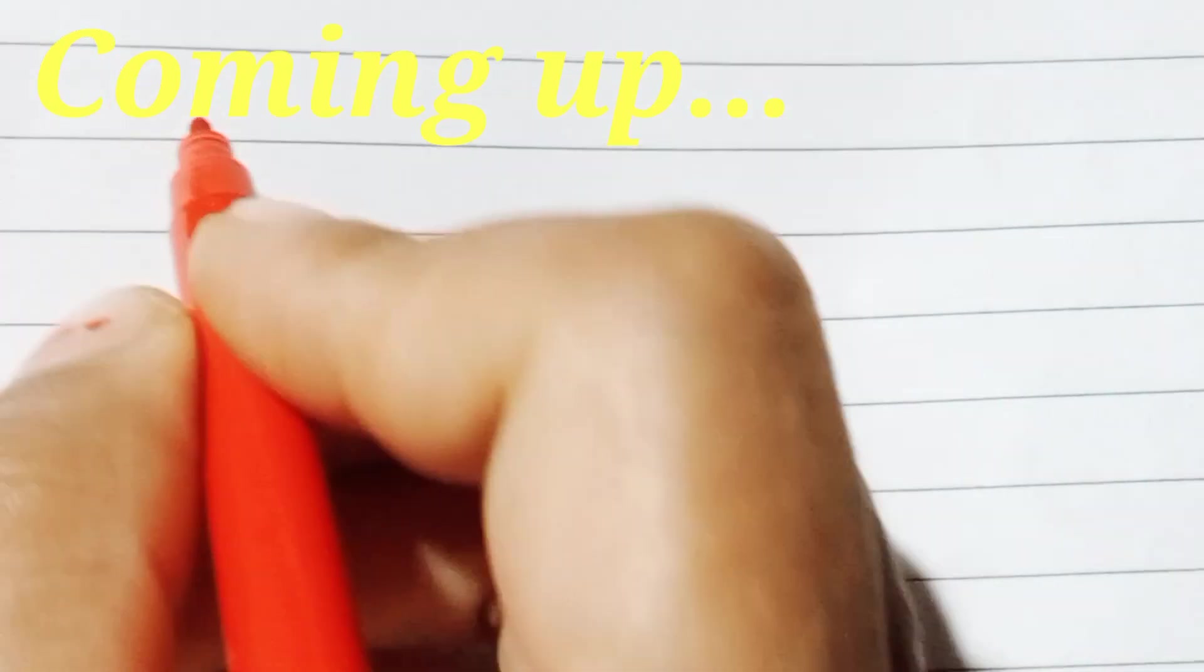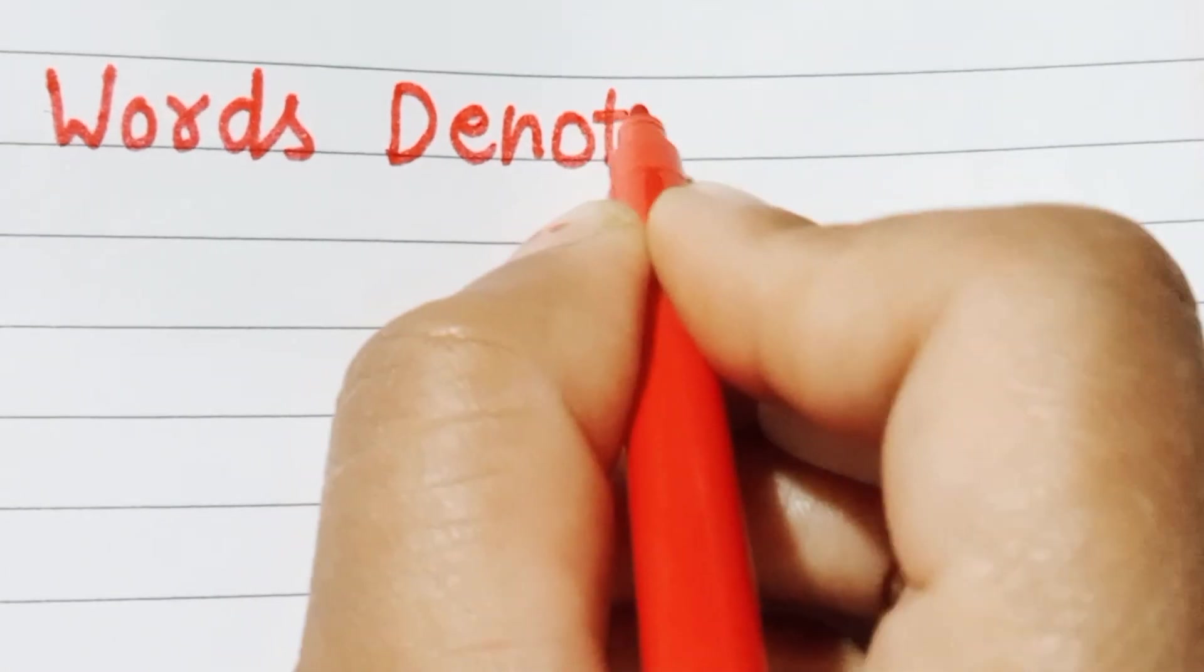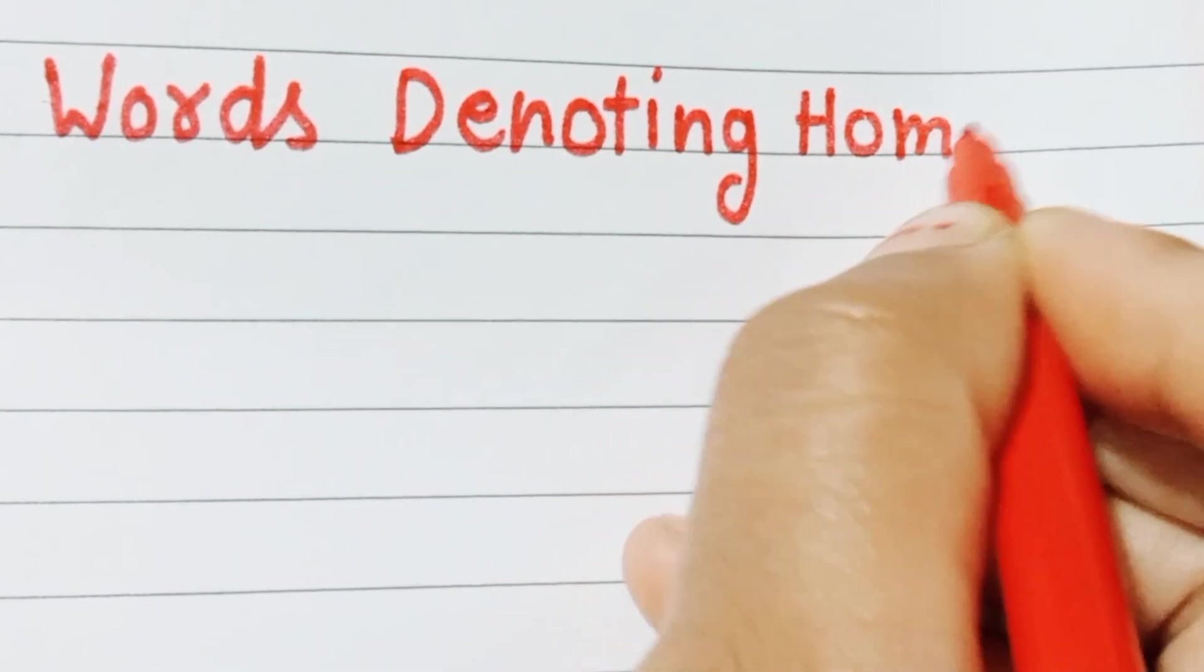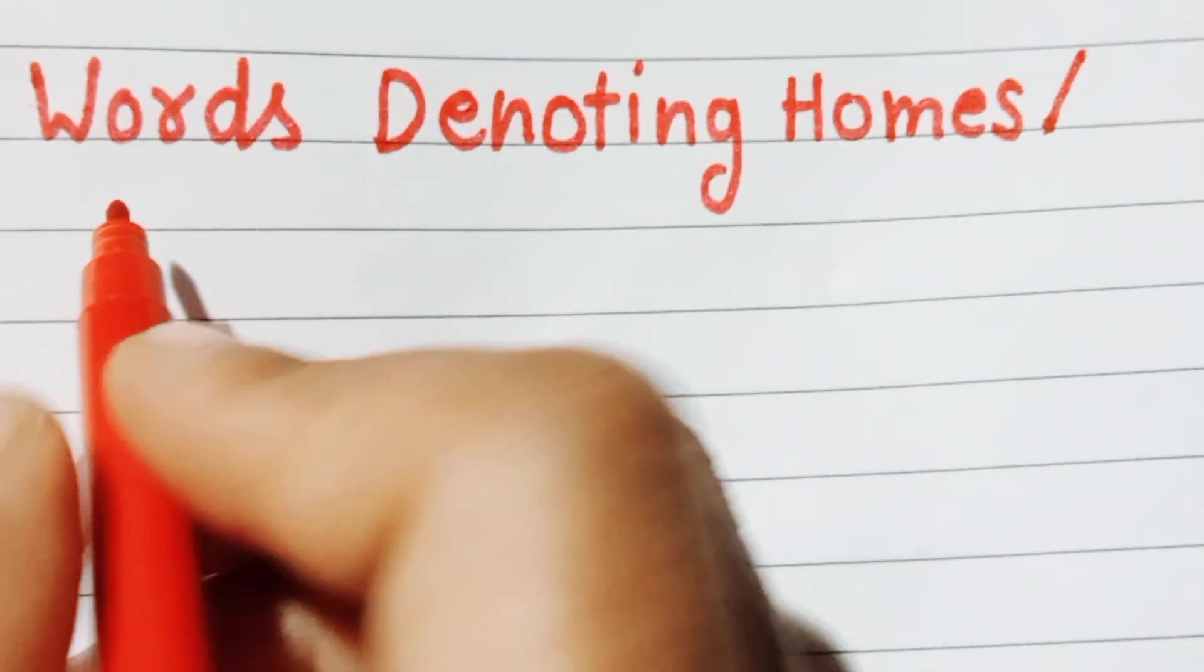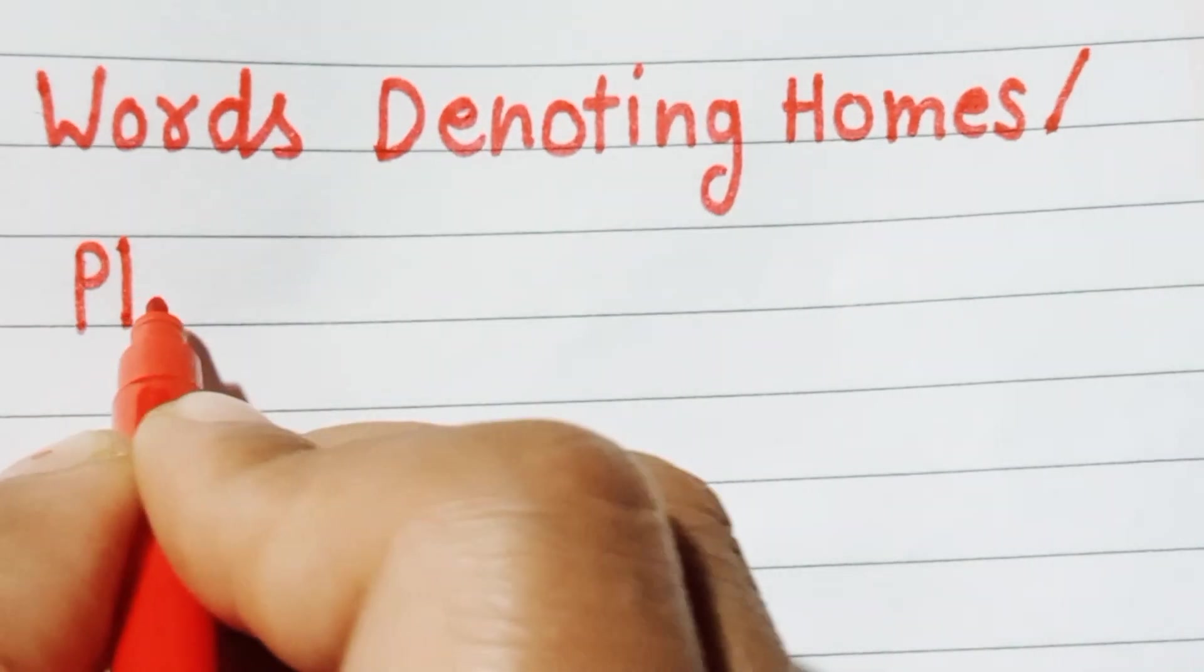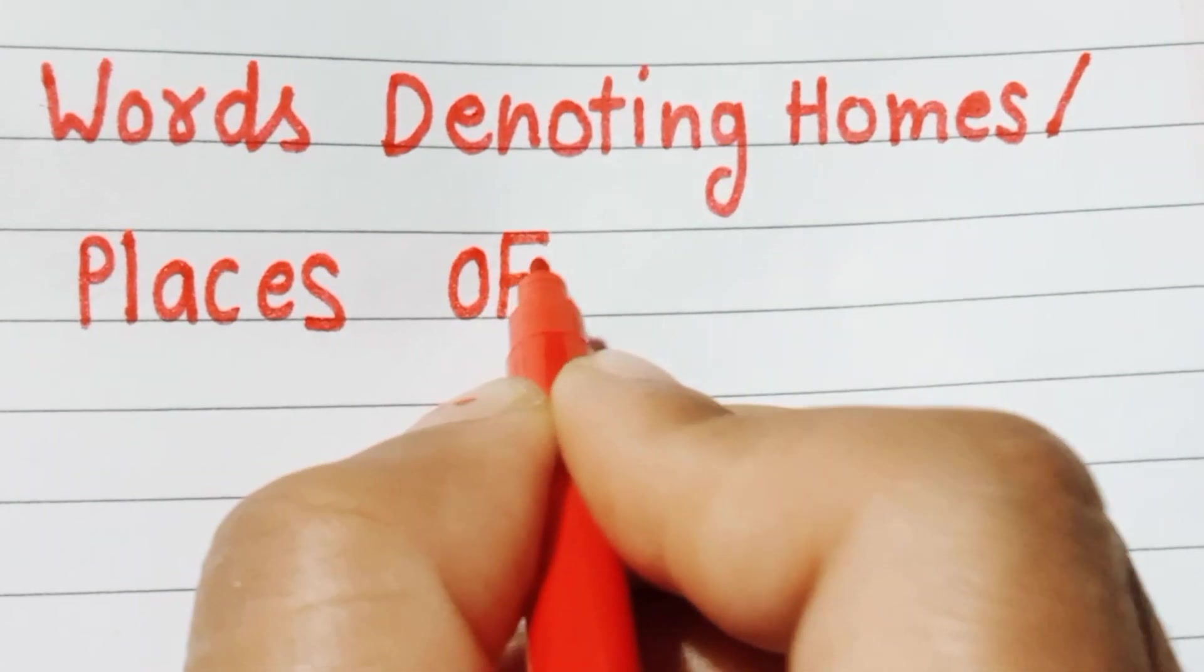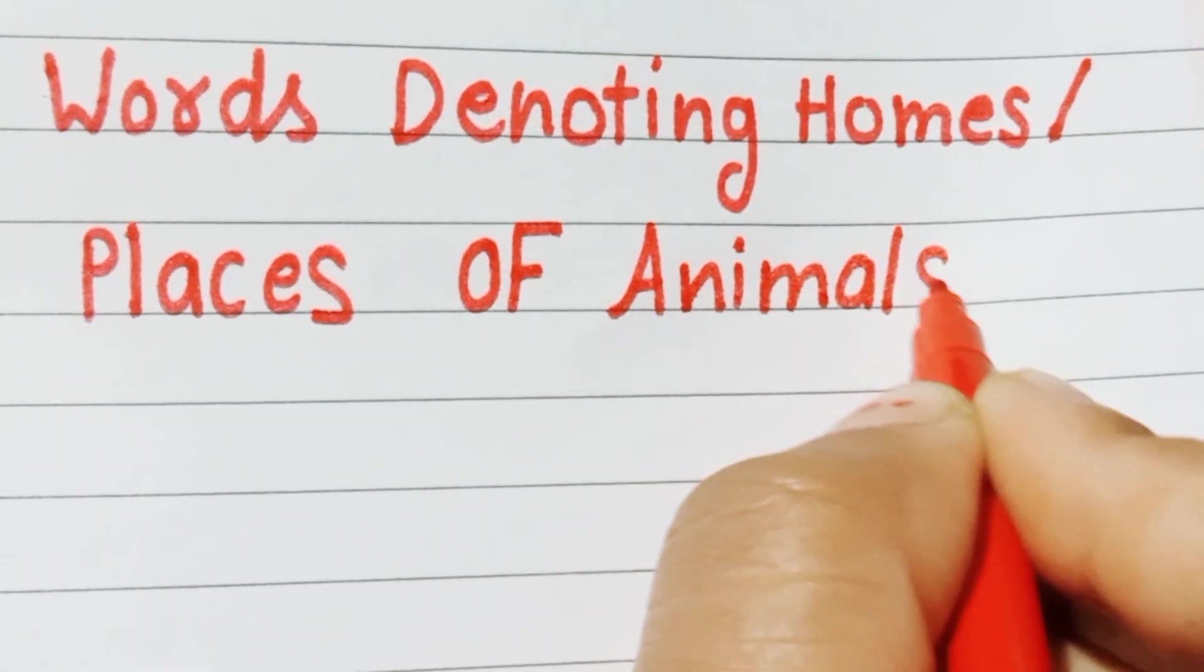Let's begin. Words denoting, d e n o t i n g, denoting homes, h o m e s, homes or places, p l a c e s, places of, o f, animals, a n i m a l s, animals.